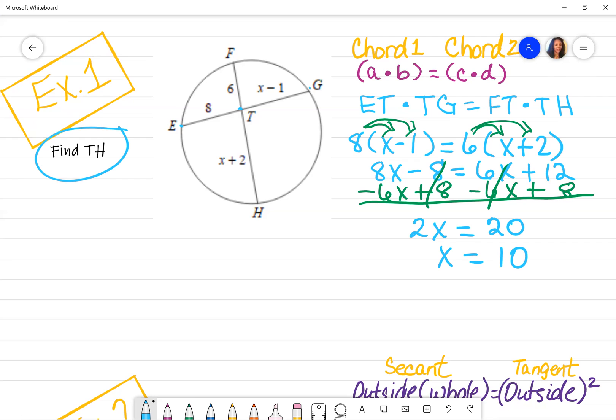Divide both sides by 2 and X becomes 10. My directions ask me to find TH. So I will go back to my problem and I will look for TH. This is TH. So TH is represented by X plus 2. We know X is no longer X, it is actually 10. So 10 plus 2, which means that TH actually is 12. That's my final answer.